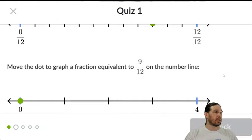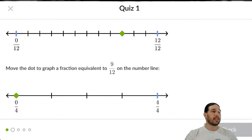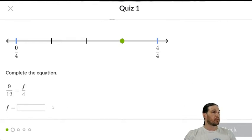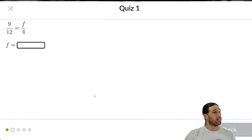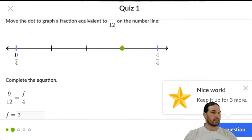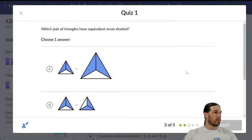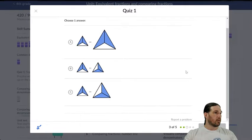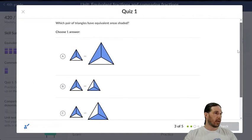Move the dot to graph the fraction equivalent to 9 twelfths on the number line. Well, that looks like 1, 2, 3 fourths right there, which means that 9 twelfths equals 3 fourths. There we go.